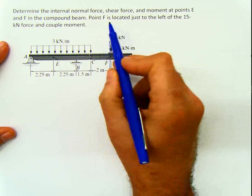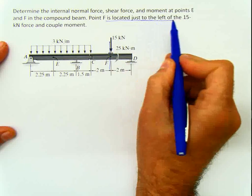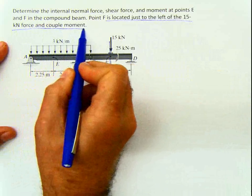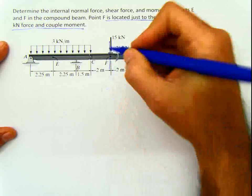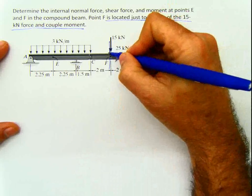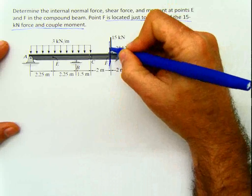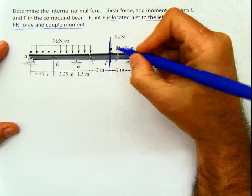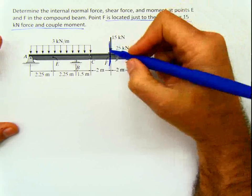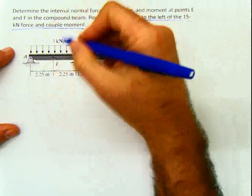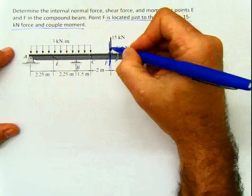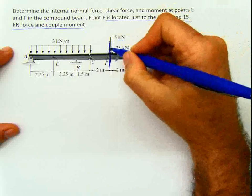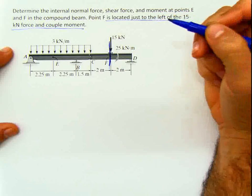The point F is located just to the left of the 15 kilonewton force and couple moment. That means the section is acting a little bit to the left. If we use this side, we don't include force and moment; if we use the other side, we have to include force and moment.